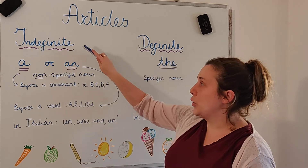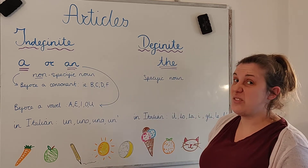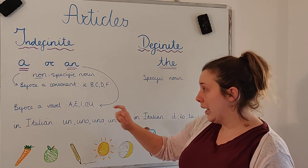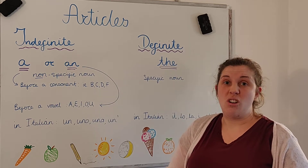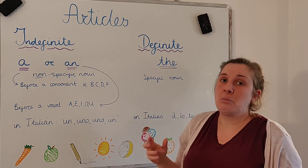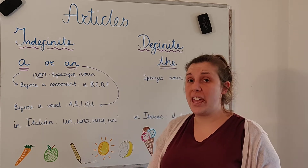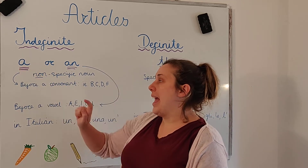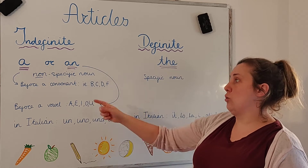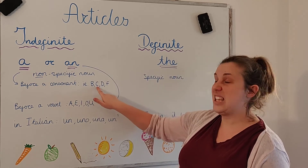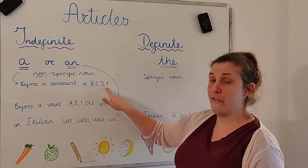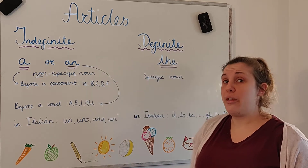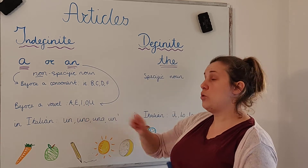There are two different types. Indefinite in English is very easy. You can either say A or AN. Both of these offer a non-specific noun, a general word. A cat, but we don't know the cat's name. A boy, but we don't know his name. A teacher. We use A before every noun that starts with a consonant — words that start with B: ball; C: cat; D: dragon; F: fish. We use AN before all the words that start with a vowel: A, E, I, O, U. Easy.